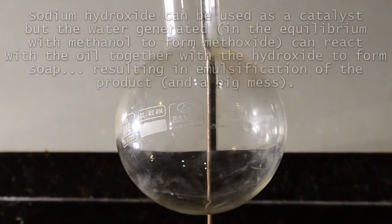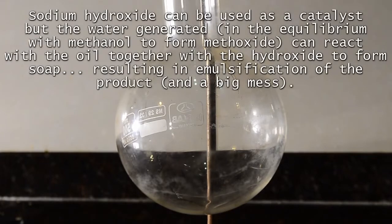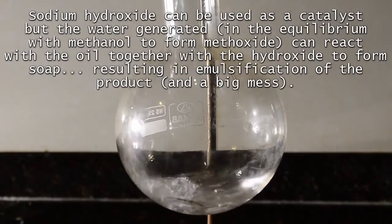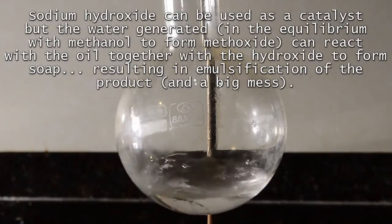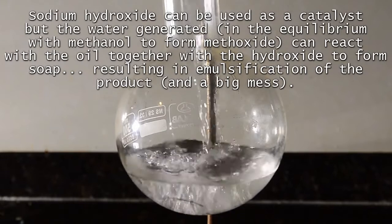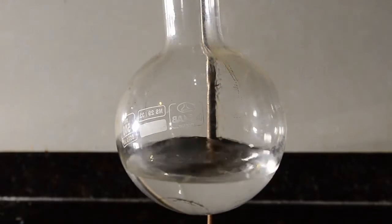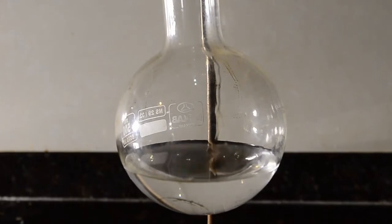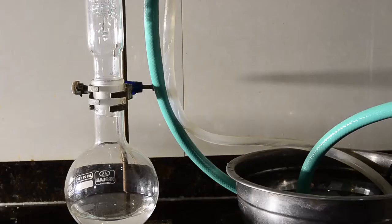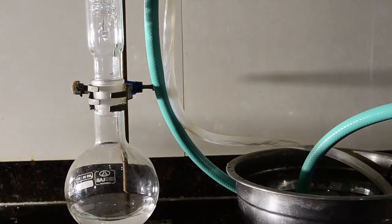Next we'll prepare our catalyst. Sodium hydroxide can be used but this has a problem of creating water in the reaction. The perfect catalyst is freshly prepared and dry sodium methoxide solution. So pour the methanol into a 500 ml flask and set it up with a reflux condenser running cold water.